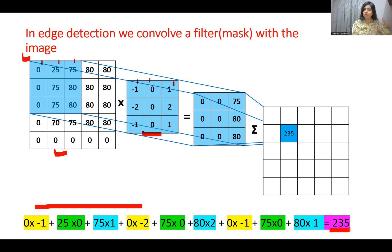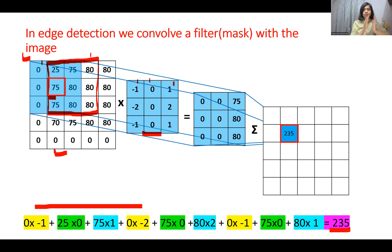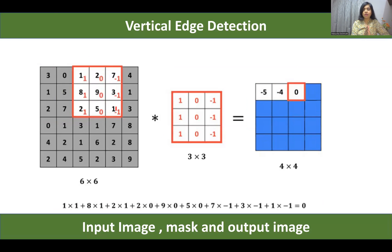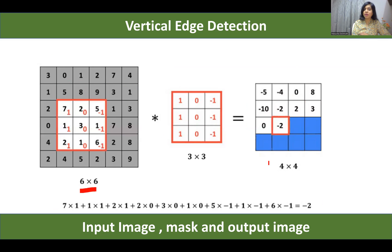After adding we get one number. Then we replace the central pixel — here 75 — with the new value obtained after convolution, giving us 235. After that we shift the mask to a new position, slide the kernel to the right, calculate again, replace the central pixel with the new value, and keep repeating. This is convolution. In this example, zero padding and wrap-around are not used, so the actual image size is 6×6 but after convolution we get only a 4×4 image, meaning we are missing information.